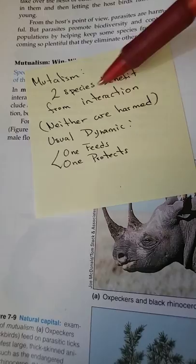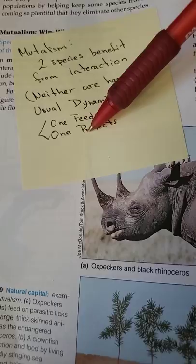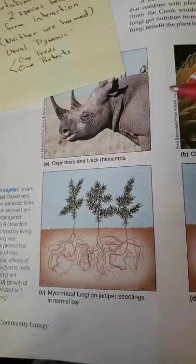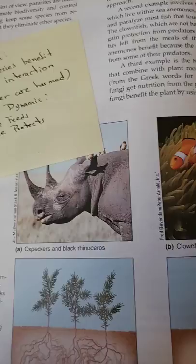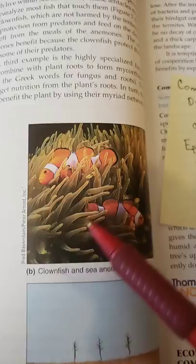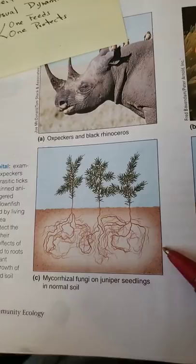Mutualism is when two species both benefit from the interaction — neither are harmed. Usually one feeds and one protects. Examples include: oxpeckers and black rhinoceros, where the oxpeckers remove ticks from the rhino's back; clownfish and sea anemone (Nemo and the anemone); and mycorrhizal fungus and juniper seedlings, where the fungus helps with germination and root growth.